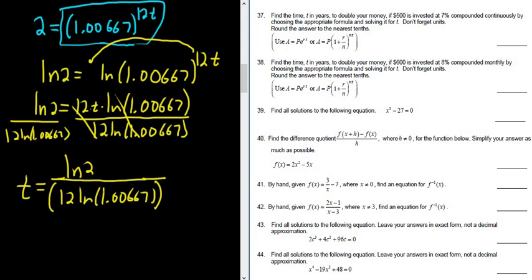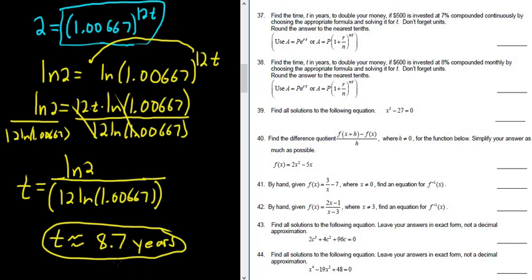Okay, how many decimals does it want? It says tenths place. So tenths is one decimal. So t is approximately equal to 8.7, and it wants the units, so 8.7 years. So that's it. That's the answer. I hope this video has been helpful.